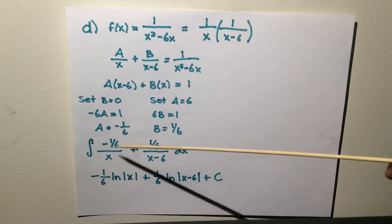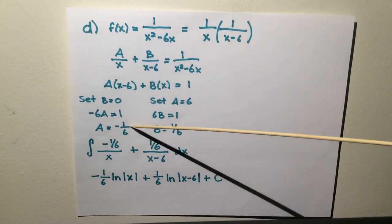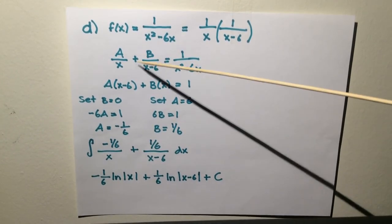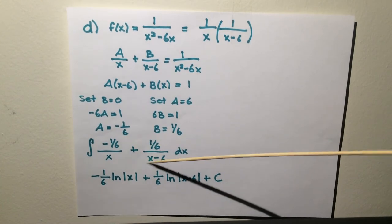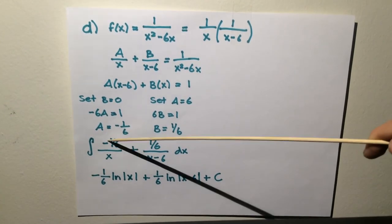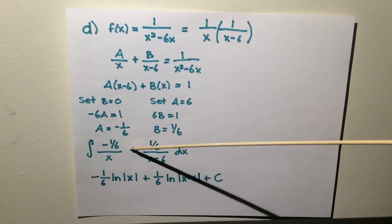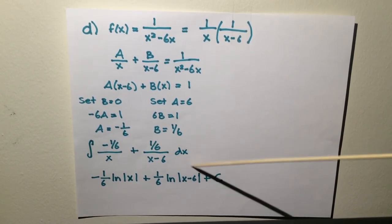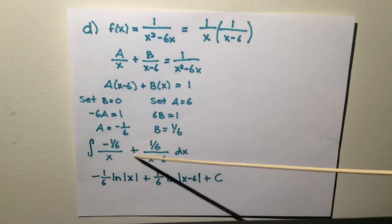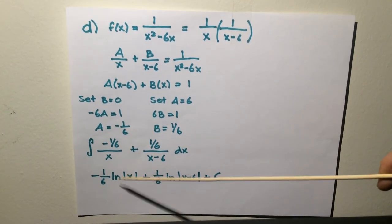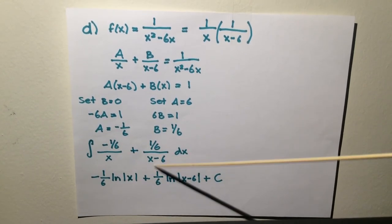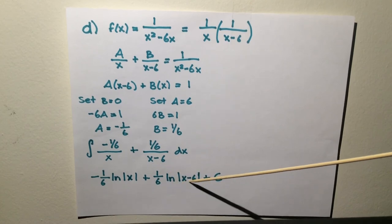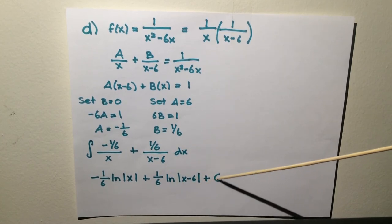Then you find the integral. You plug negative 1 over 6 and 1 over 6 back into this formula. You find the integral of negative 1 over 6 over x plus 1 over 6 over x minus 6 dx. The integral of this is negative 1 over 6 ln of x plus 1 over 6 ln of x minus 6 plus c.